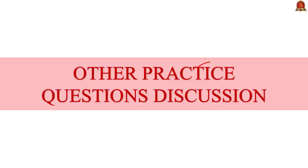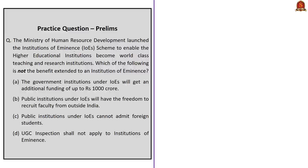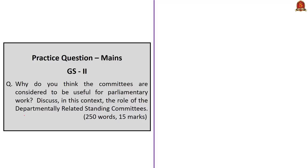For the Institutions of Eminence question: which of the following is not the benefit extended to an Institution of Eminence? The correct answer is option C — public institutions under the Institutions of Eminence scheme cannot admit foreign students. Note that they can admit foreign students. They also have the freedom to recruit faculty from outside India, will get additional funding of up to one thousand crores, and UGC inspection shall not apply to Institutions of Eminence. So the correct answer is option C.